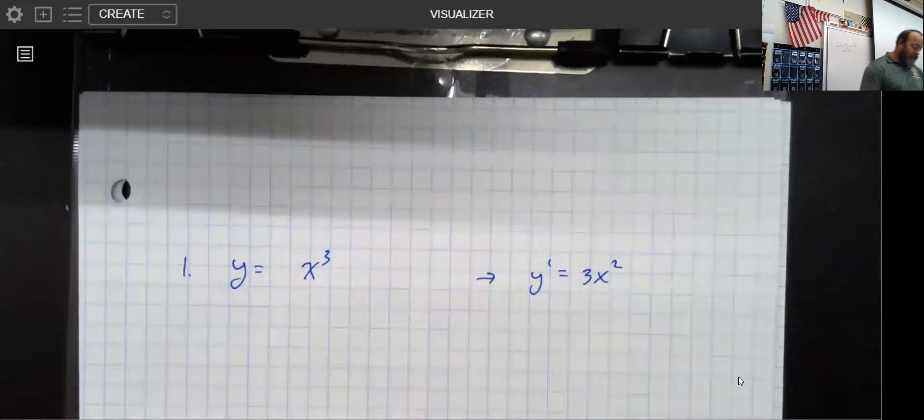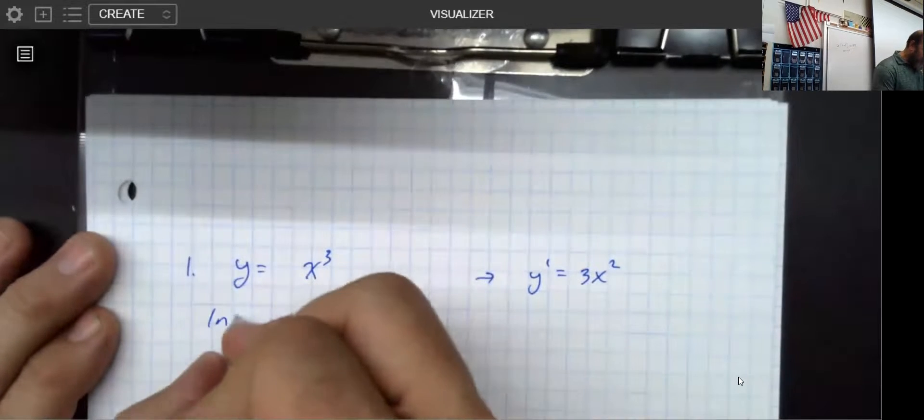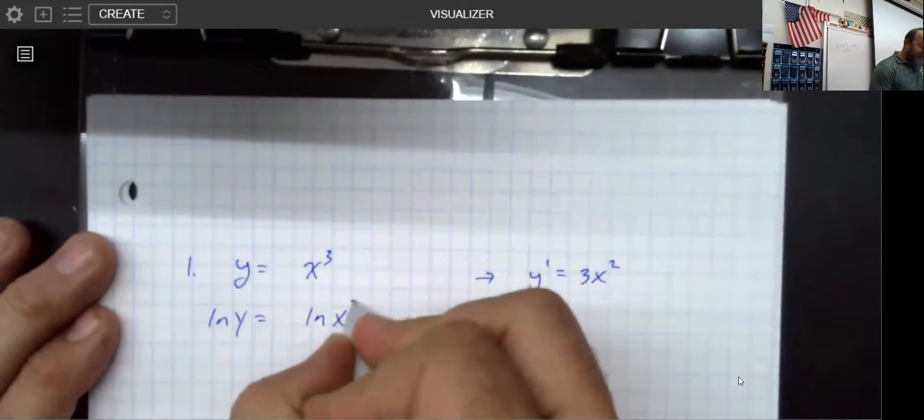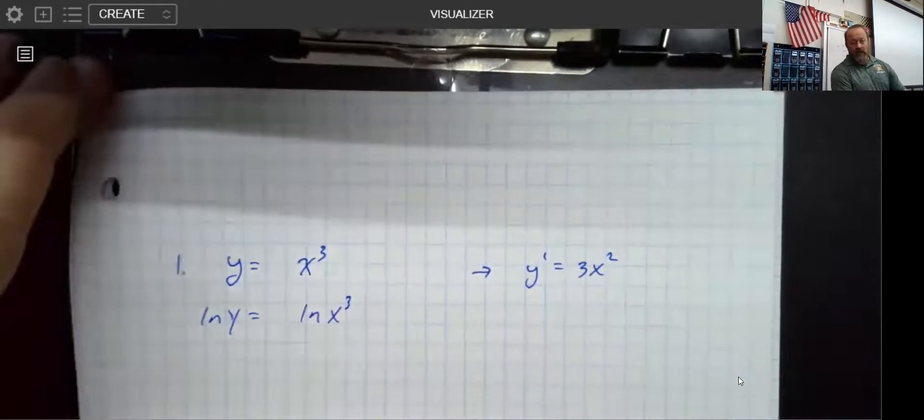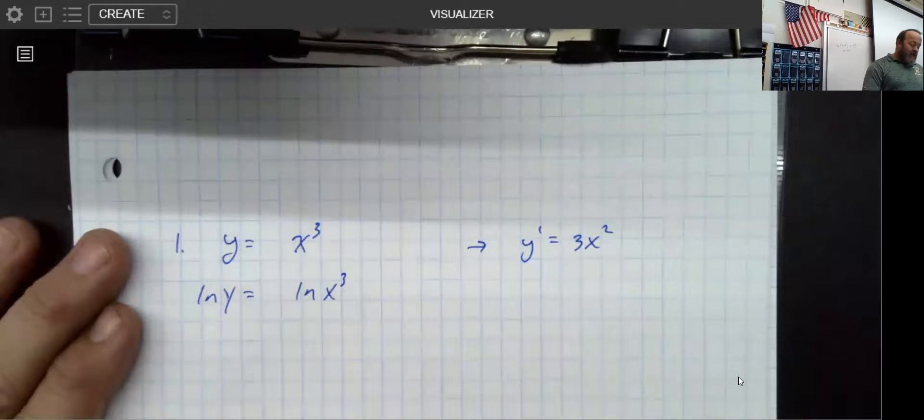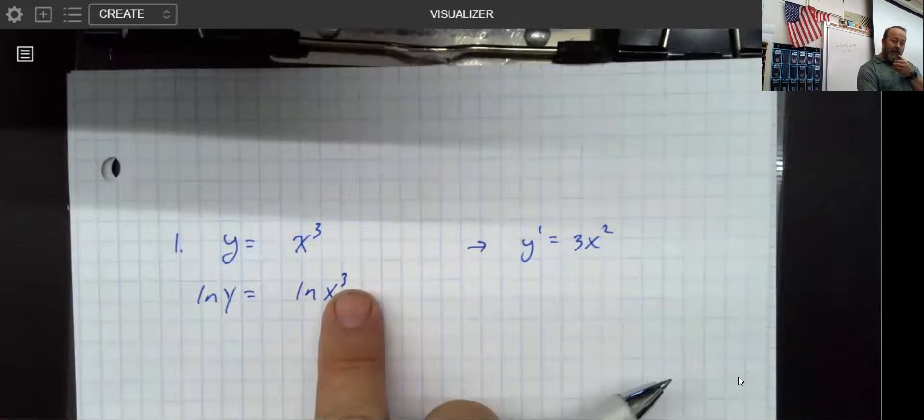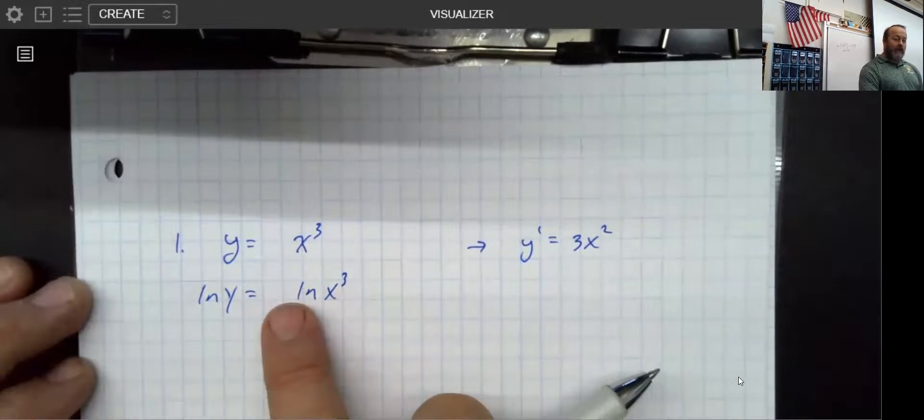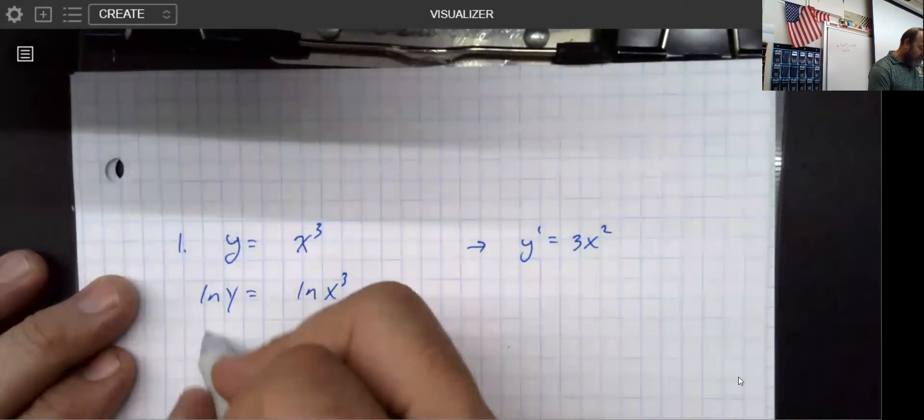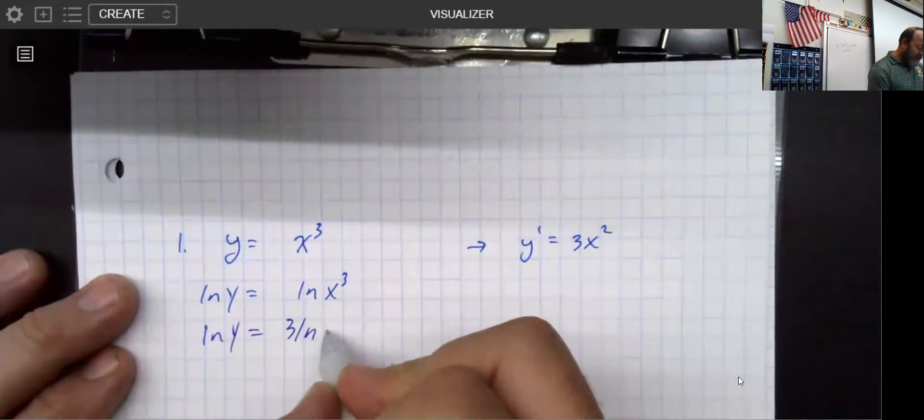So here's what we're going to do. I'm going to go ahead and take the log of both sides. A property of logarithms says that anytime you have an exponent and a logarithm, it can become a coefficient. So that's what I'm going to start with, writing it this way.